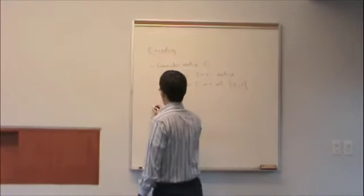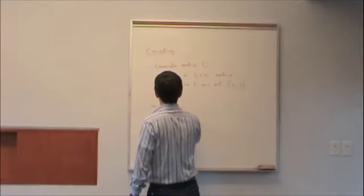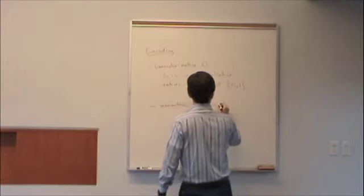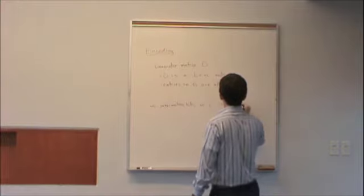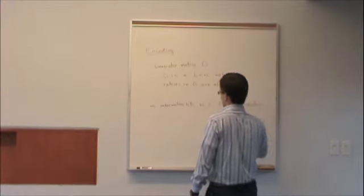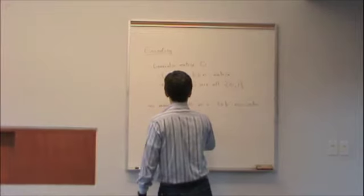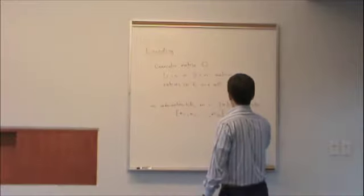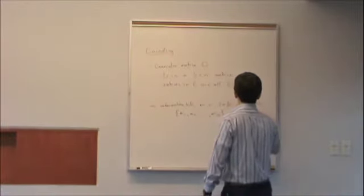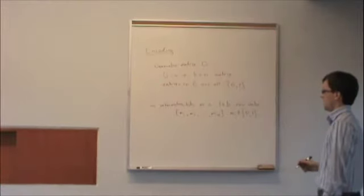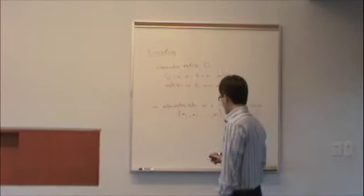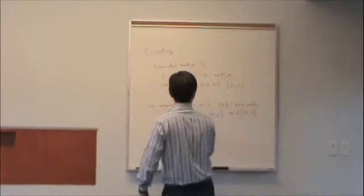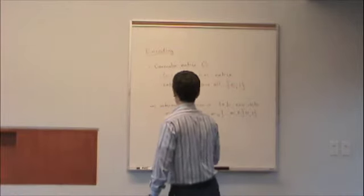What we do is, our information bits are contained in a 1 by K row vector. Let's call that M1, M2, Mk, where all the M's are binary. Actually, let's call this vector M. M for message. So M is the message that I want to send.